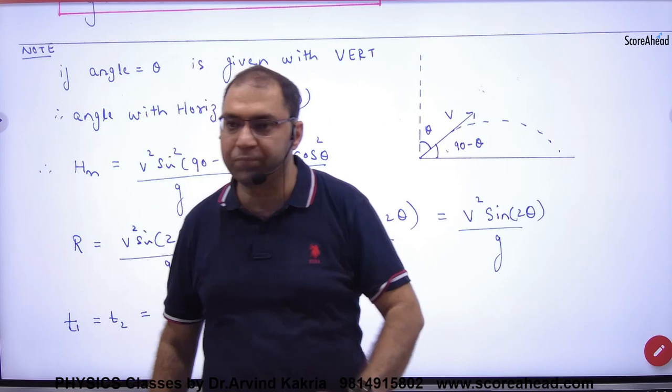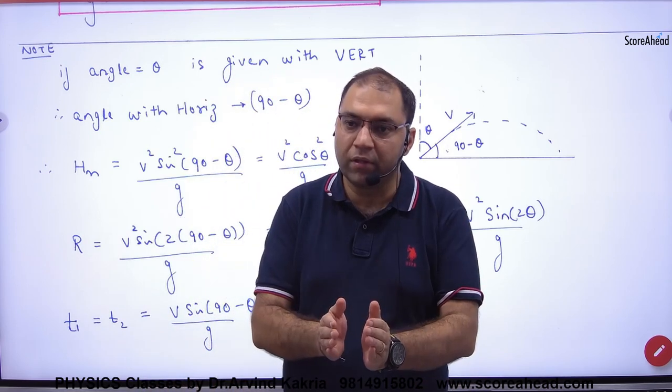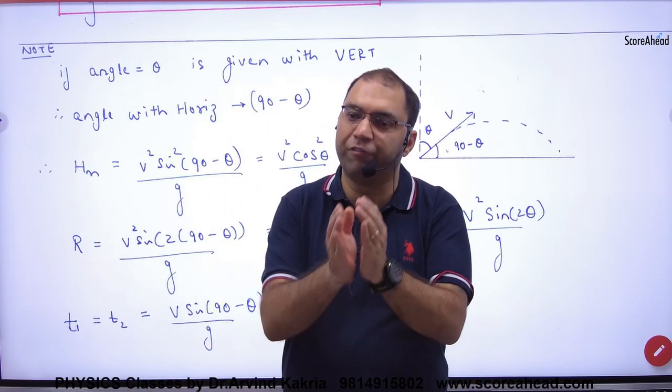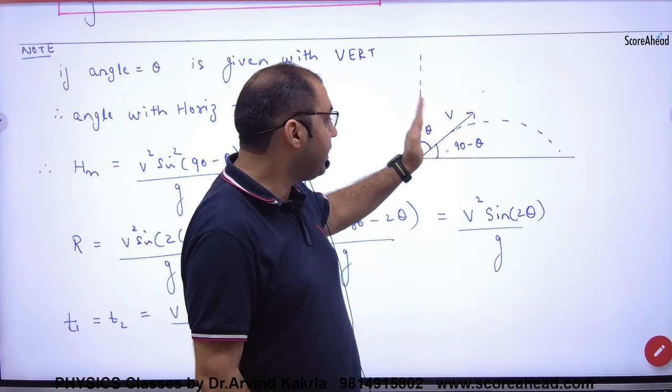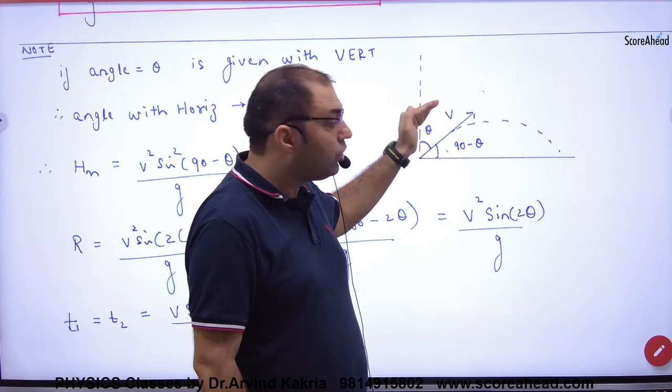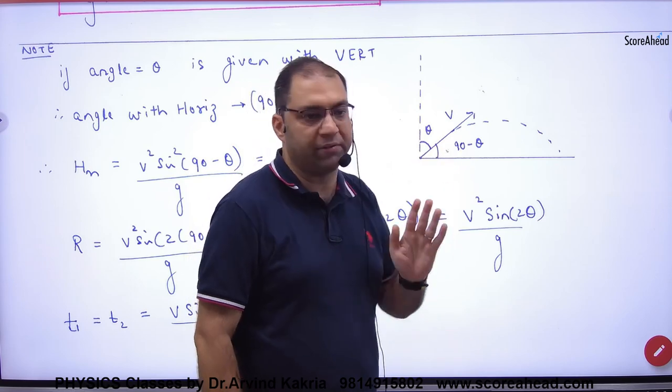We have thought about the angle with horizontal. But what will happen to you? You will be given the angle with vertical. Now, the angle is not with horizontal. V velocity has made an angle with vertical. So, what is the angle with horizontal? 90 minus theta.